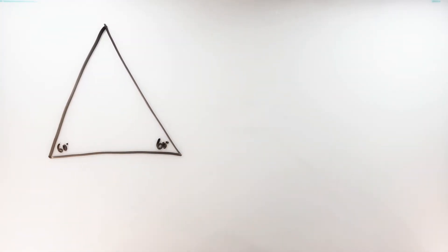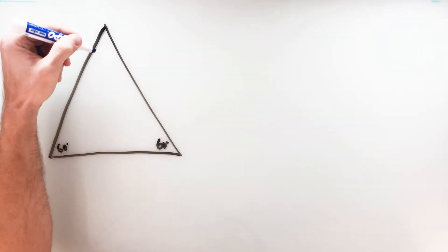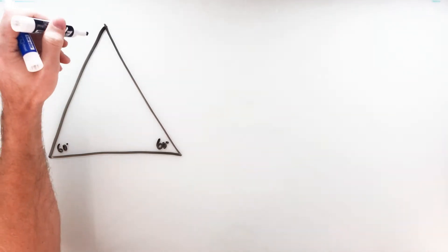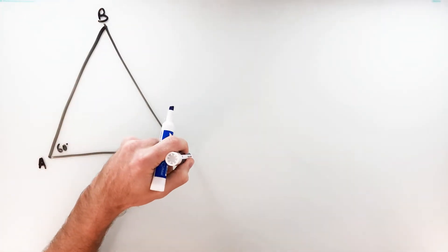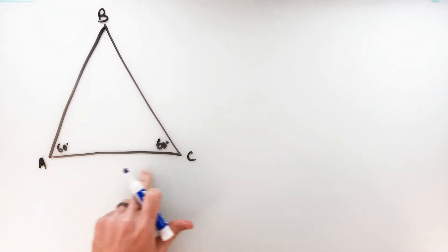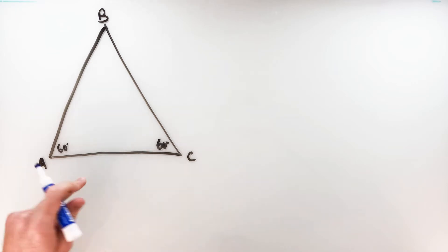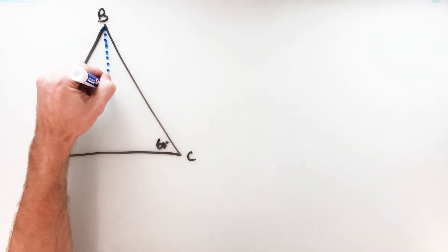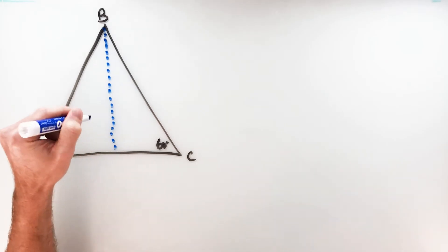To create our right triangle, we're going to essentially split this triangle in half by drawing the perpendicular bisector of this segment down here. I'm going to put some letters for points. So we've got triangle ABC as the equilateral triangle. I'm going to draw the perpendicular bisector of segment AC. Perpendicular meaning I'm going to cross it at 90 degrees, and bisect means to cut it into two congruent parts.